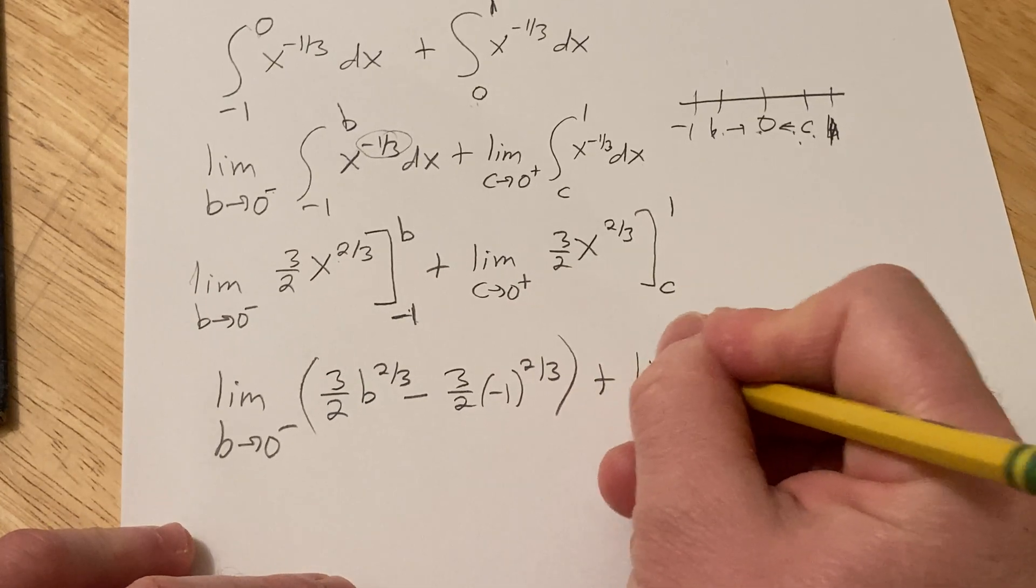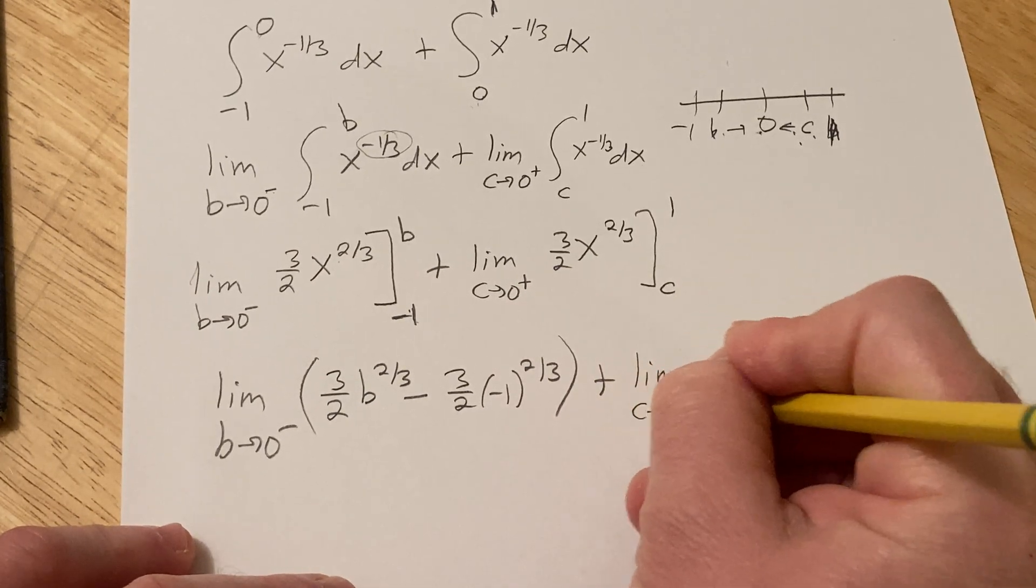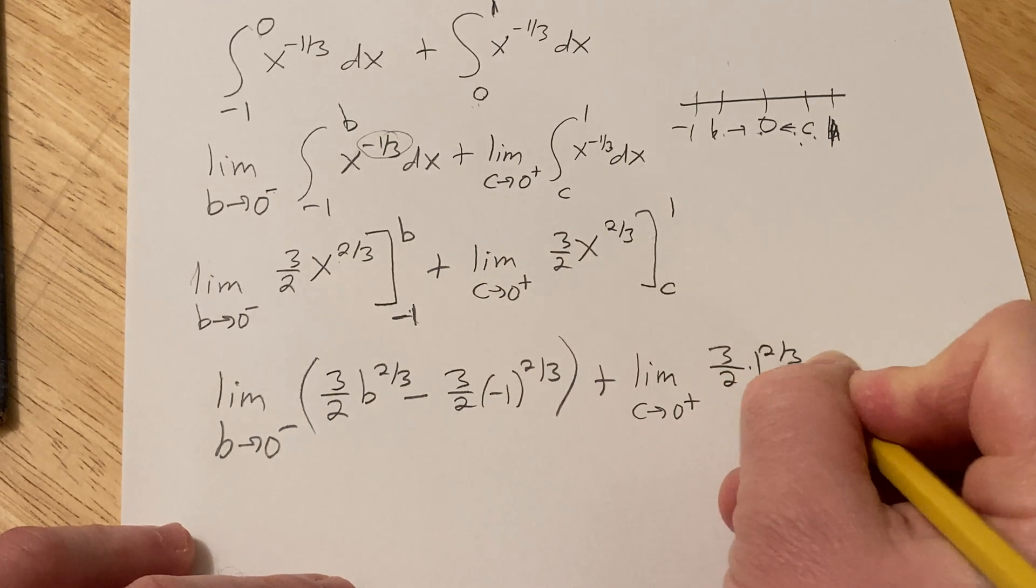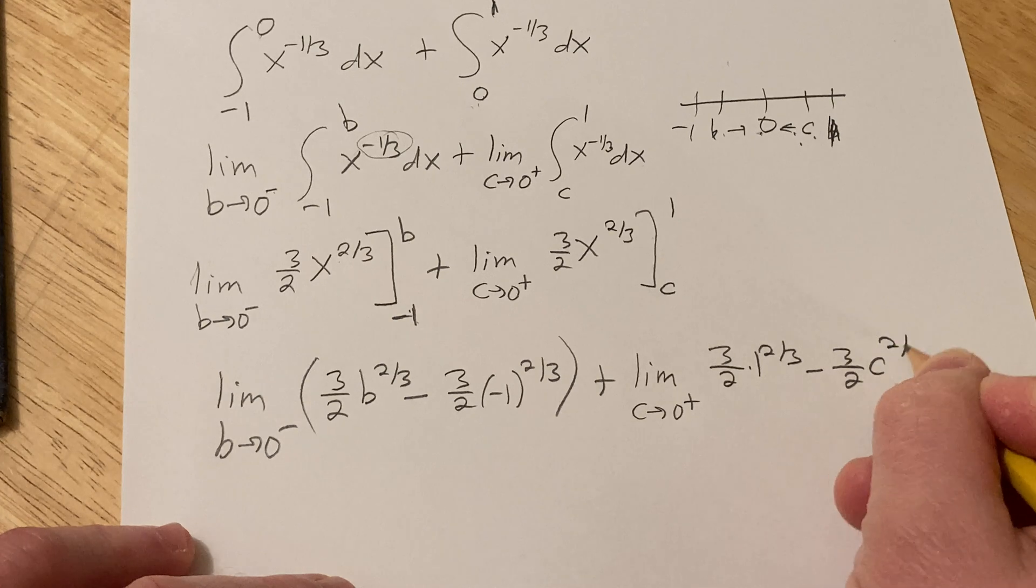Plus the limit as c approaches zero from the right. Plugging in the one, we get three-halves times one to the two-thirds minus three-halves c to the two-thirds.